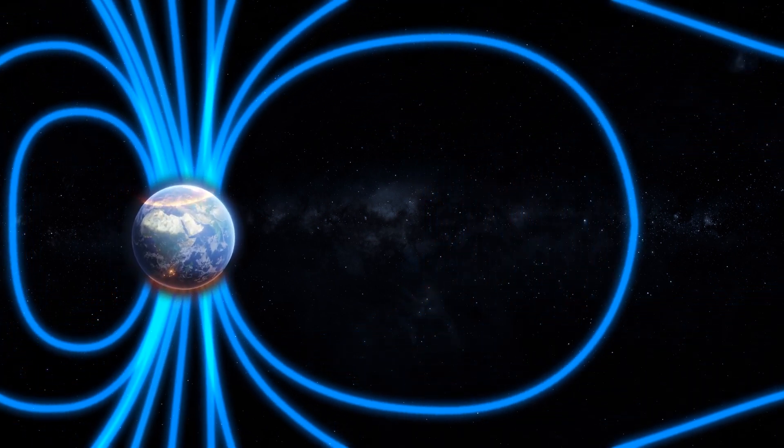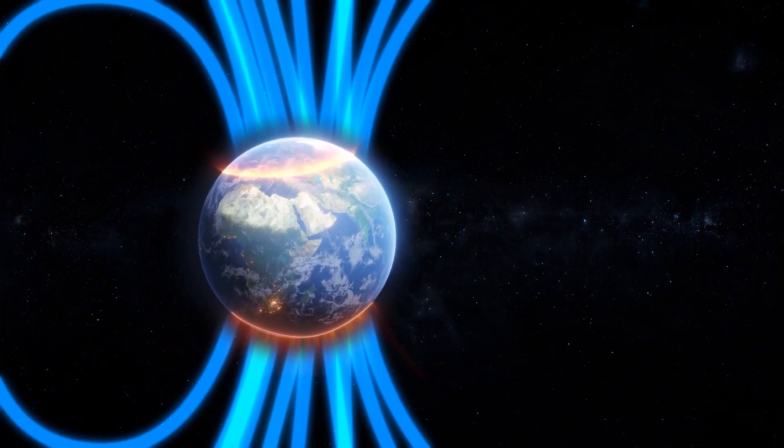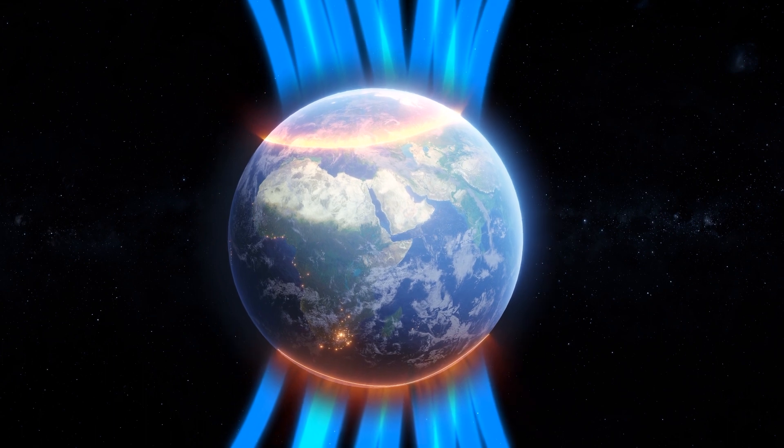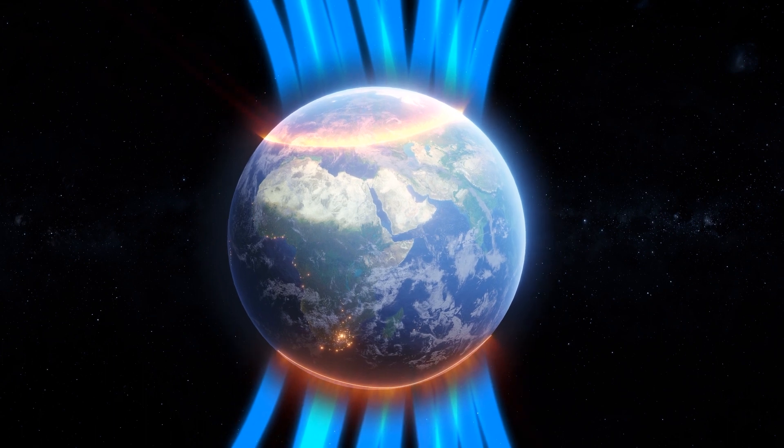The new data shows that the fluctuations near Earth are connected to field-aligned currents high above Earth that contain these fast-moving bursty bulk flows.